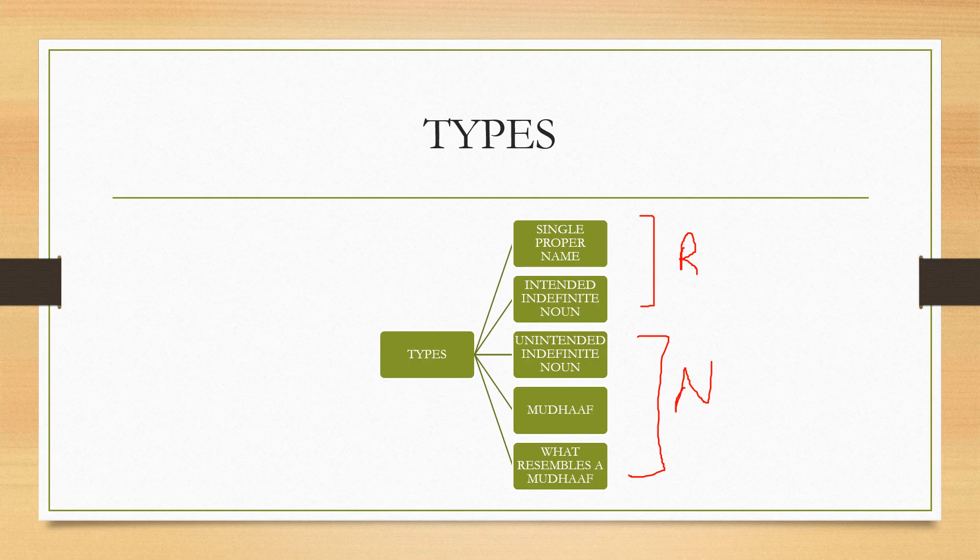The fourth type is the mudhaaf. For example, 'ya taliba al-ilm' - taliba here is a mudhaaf, al-ilm is a mudhaaf ilayh. So here this term talib is a munada and it will always be mansoob. 'Ya taliba al-ilmi ijtahid', 'ya taliba al-mali', whatever you want to follow the sentence or end the sentence with. But here talib is a mudhaaf, and therefore the mudhaaf will be mansoob and it falls as a munada.